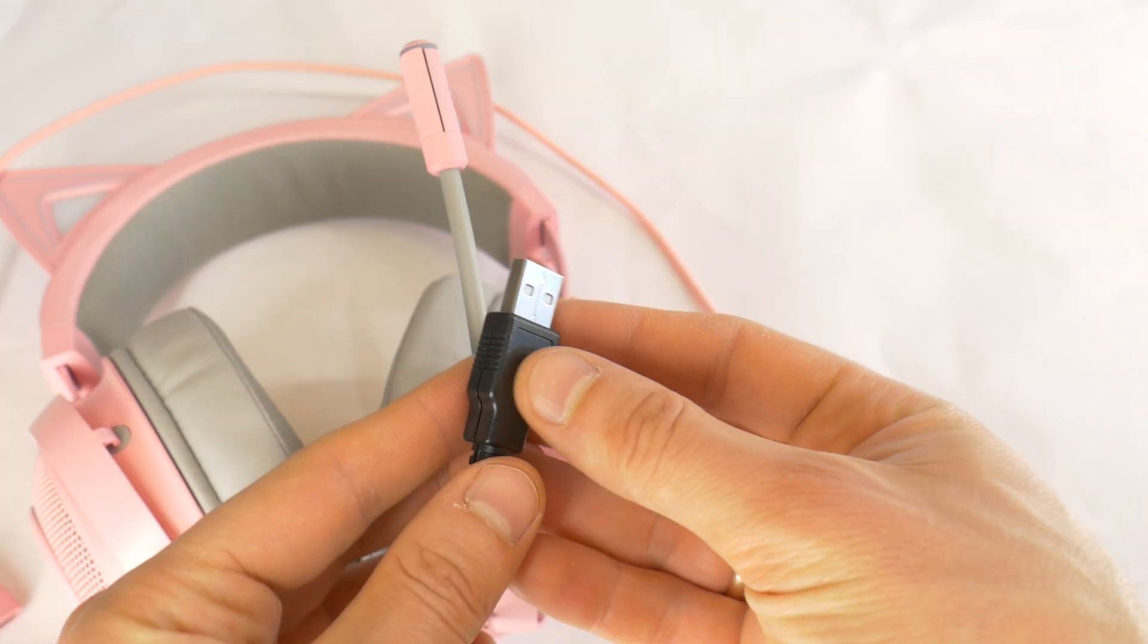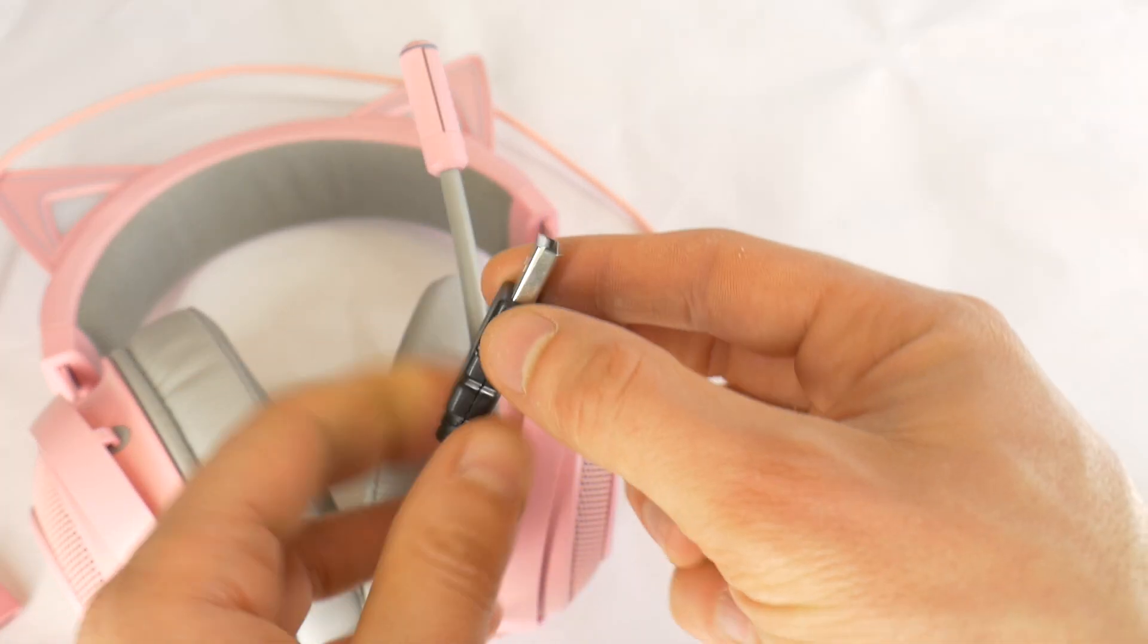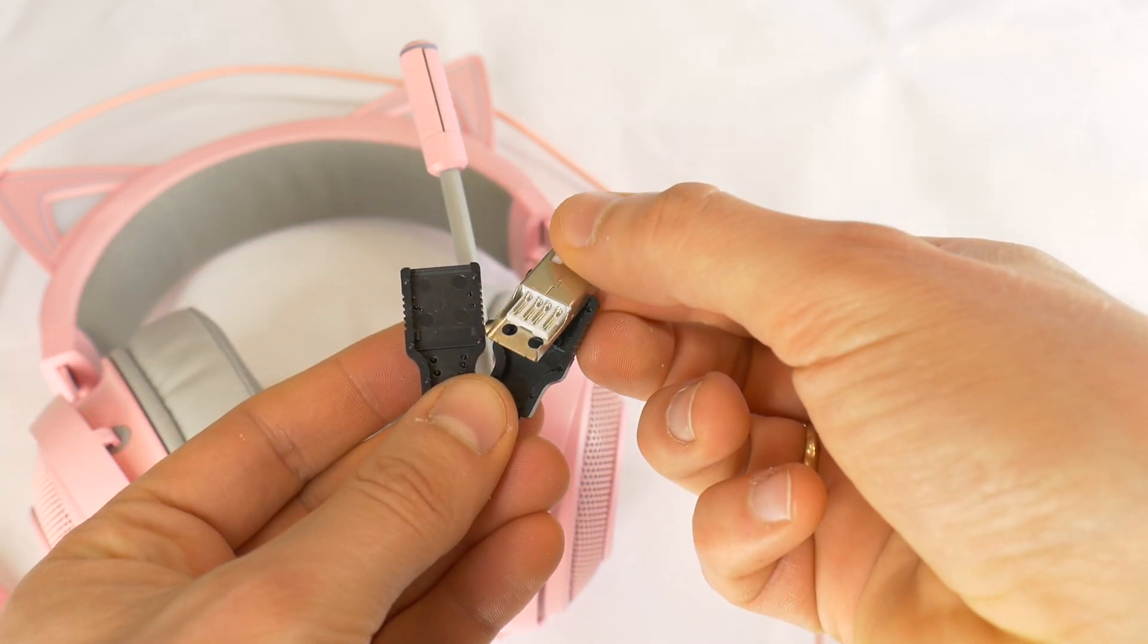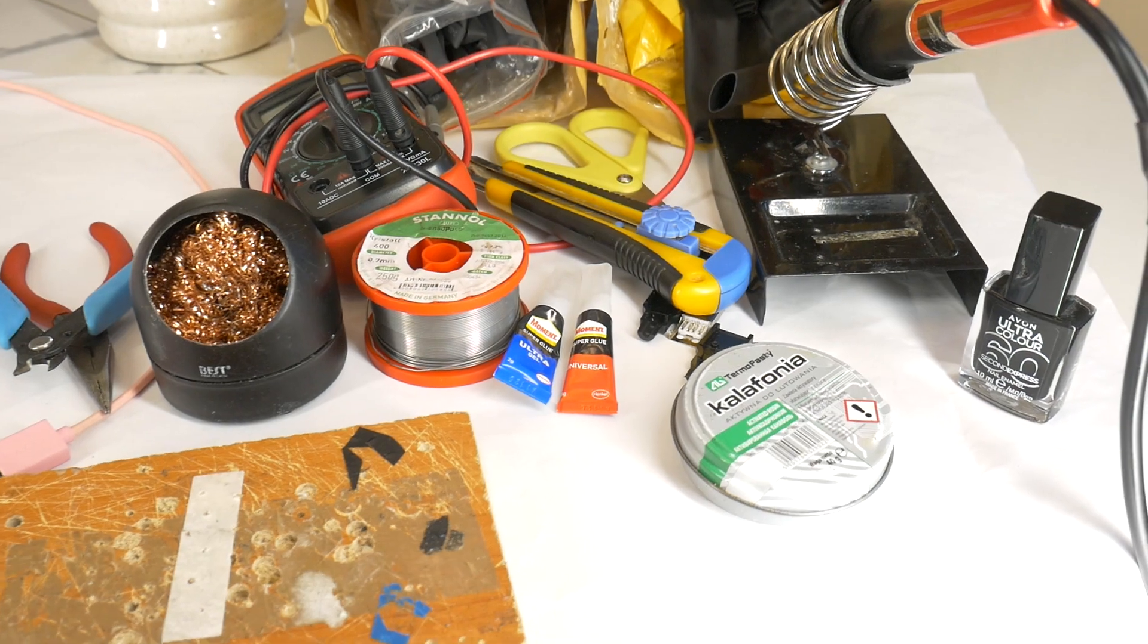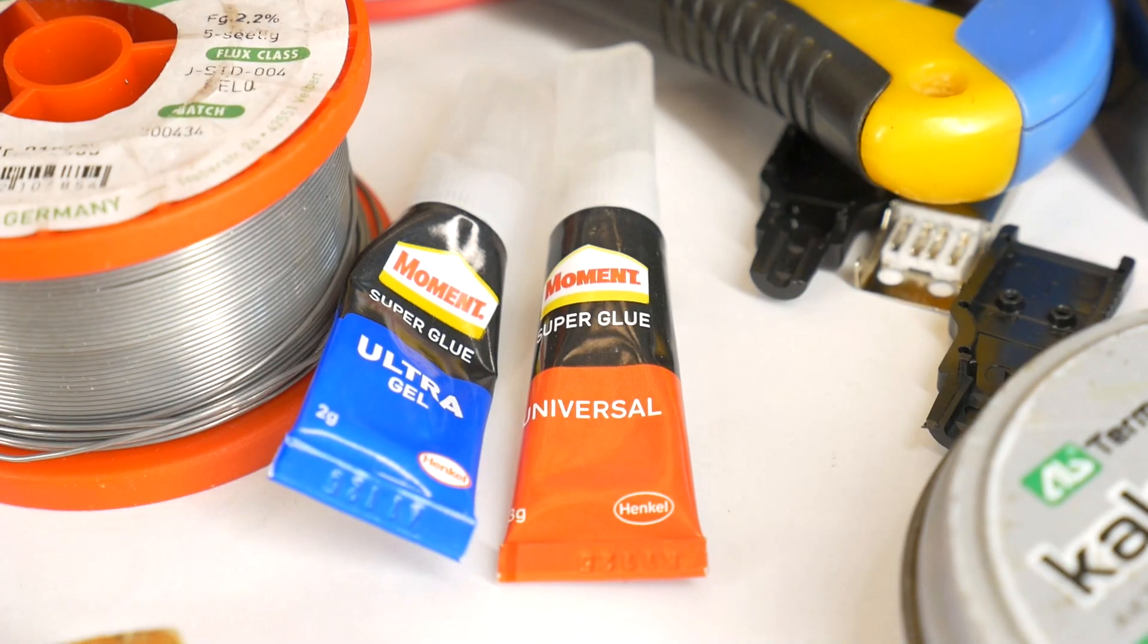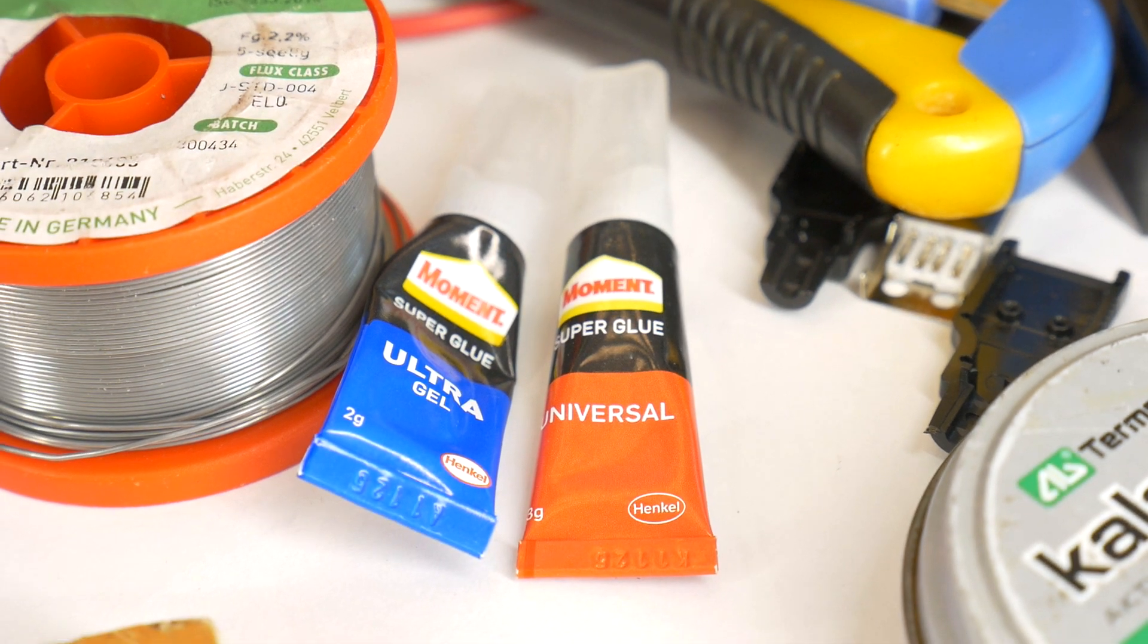To repair this damaged USB plug you will need to buy a replacement USB connector. The link to it is in the video description. You will also need a soldering kit, some heat shrink tubing and super glue which you can borrow from your grandmother.